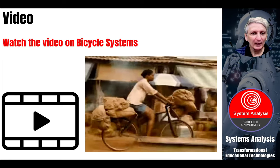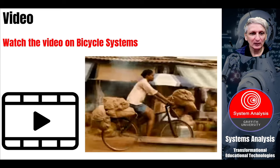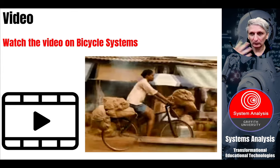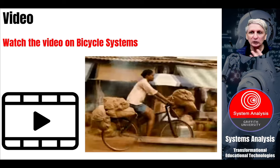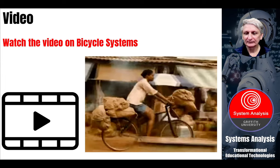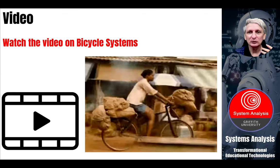Let's have another little video. This one looks at the idea of a bicycle as a system, and in this case the bicycle is being used for multiple purposes. Think for a moment — what are the different uses you could apply to a bicycle? A bicycle represents generally a form of transport. What uses can we use a bicycle for? We're going to look at a little video clip that explores some other potential uses for a bicycle, in this case in Africa.